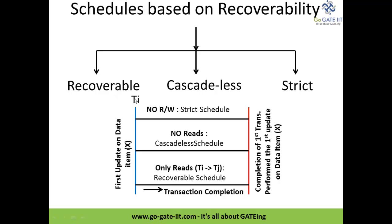Here you can see that we have a transaction TI which shows the first update on the data item X. This blue line and red line shows the completion of this transaction that performed the first update on data item X. With respect to recoverable schedule, from the first update on data item X until the completion of the transaction, if only reads are present, we will check whether the completion of the transaction is in the pattern TI to TJ. Then it is called a recoverable schedule.